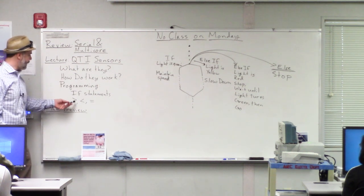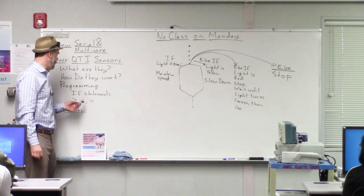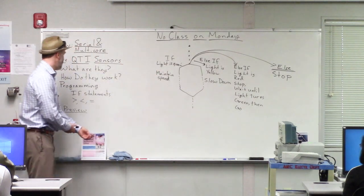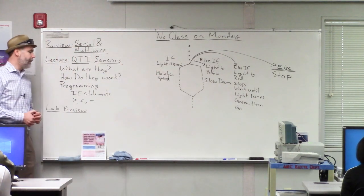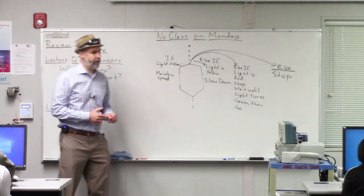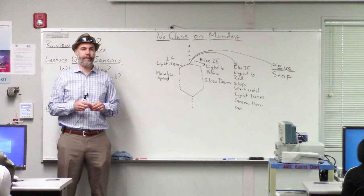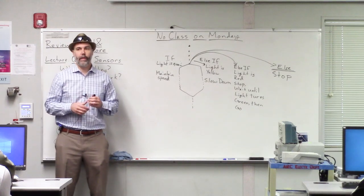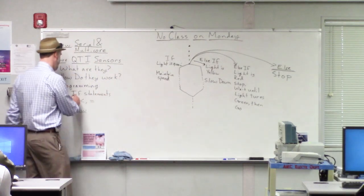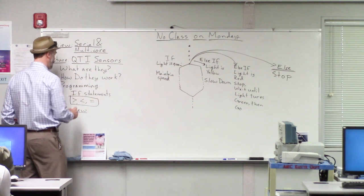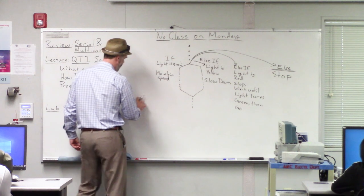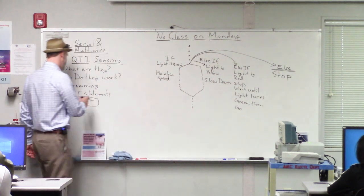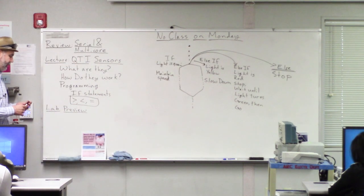Along with if statements, you often make decisions based on numbers, so you need comparisons. You might say if my speed is less than the speed limit, speed up, or if my speed is above the speed limit, slow down. For that we need greater than, less than, or equal to comparisons. Those are found in almost every programming language, and they're available in Blockly too. I'll show you where to find them today.